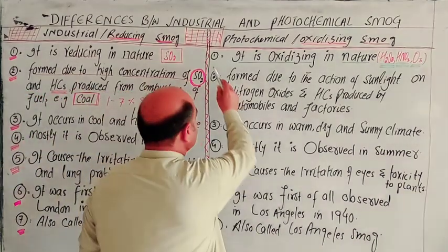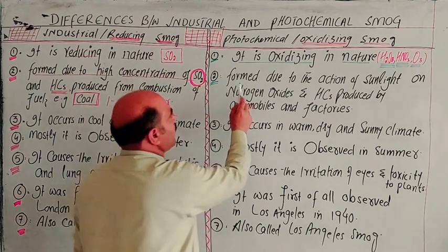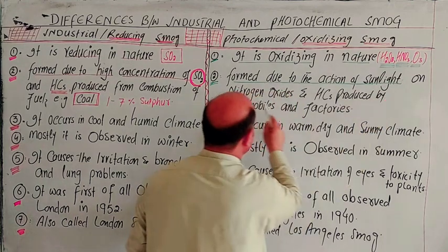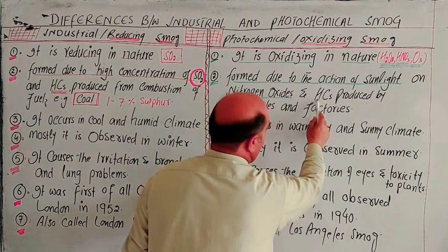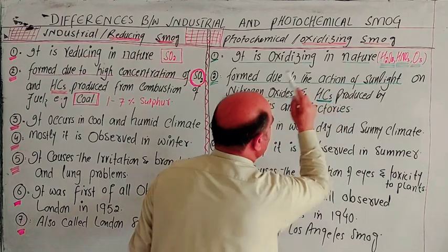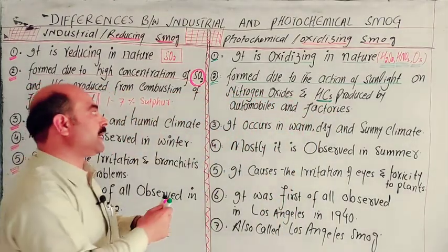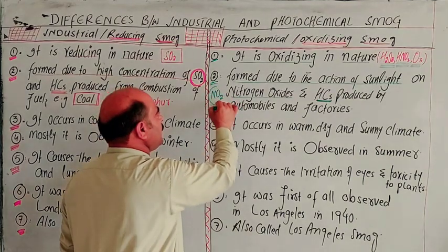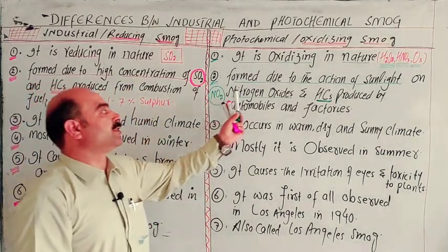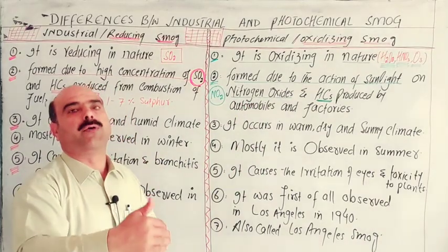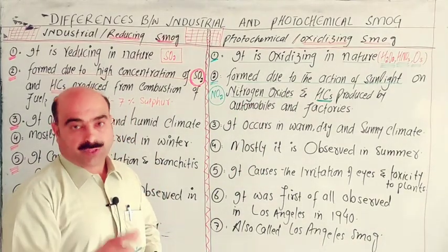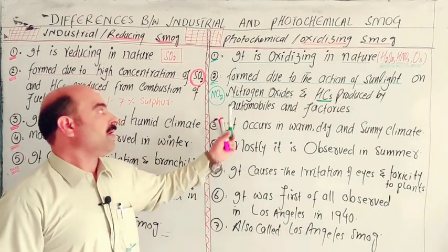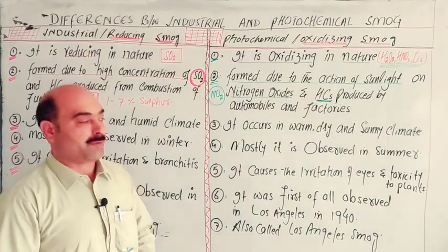On the other hand, photochemical smoke is formed due to the action of sunlight on nitrogen oxides and hydrocarbons — mainly nitrogen dioxide. So sunlight radiation acts on these compounds, and photochemical smoke is formed.